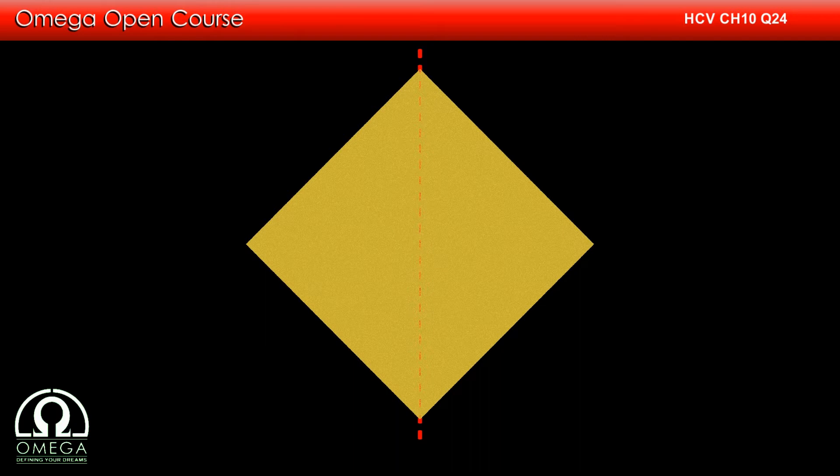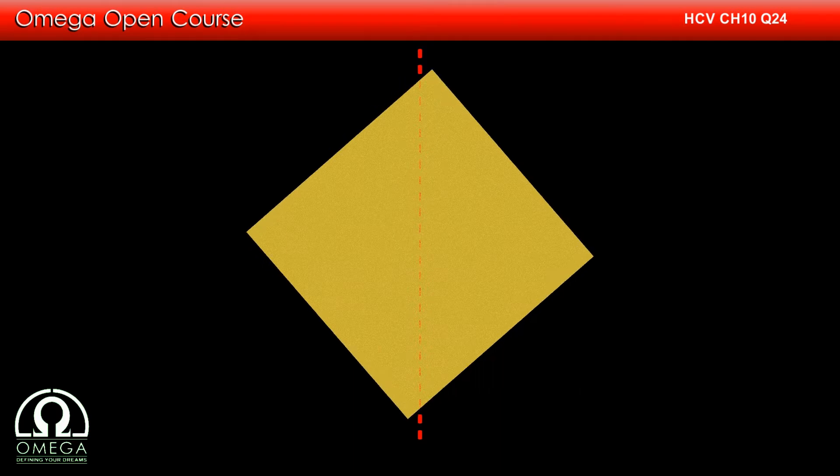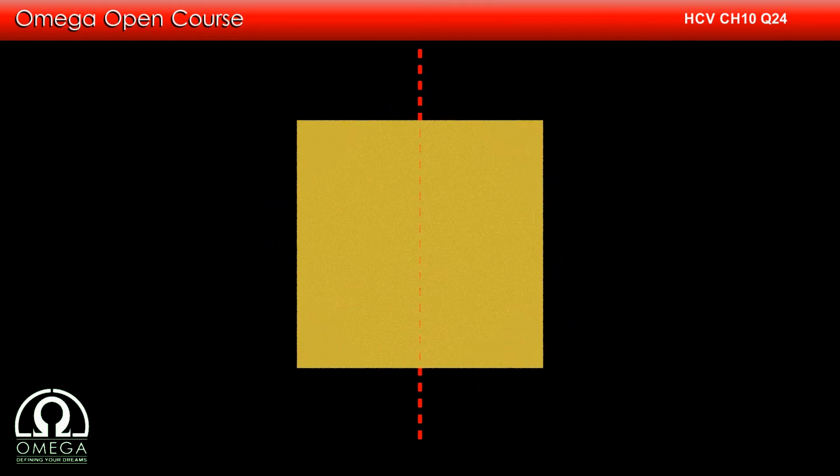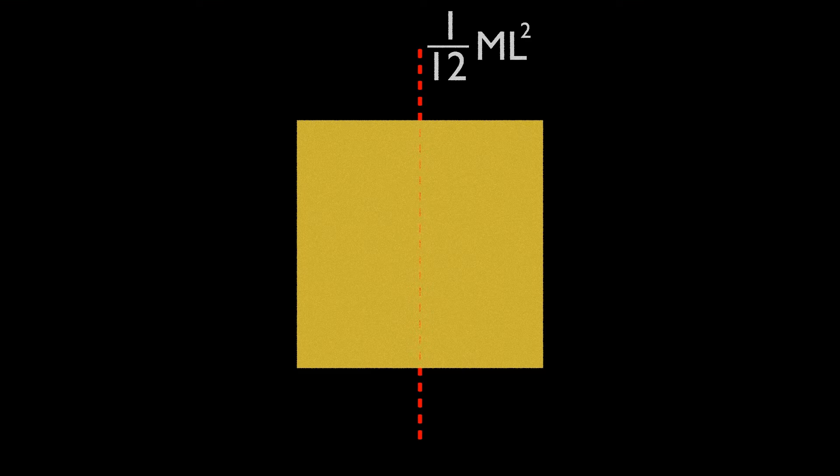First, let us find the moment of inertia of the square sheet about its diagonal. We know that the moment of inertia of the square sheet about the axis bisecting it into two parts is given by 1 by 12 ml squared, where l is the edge of the square.